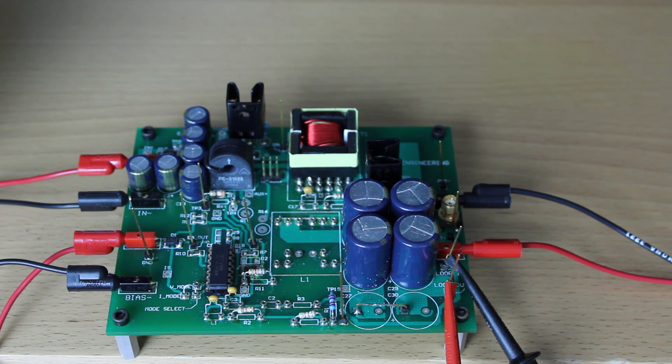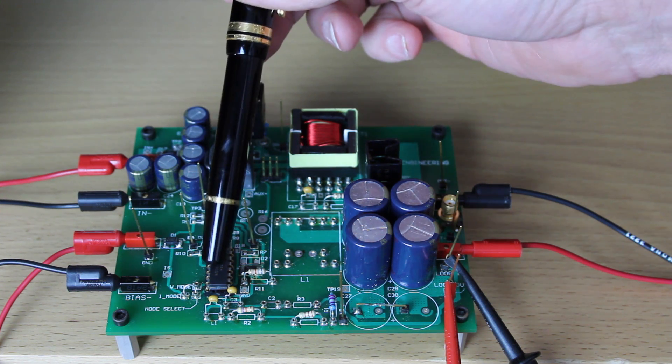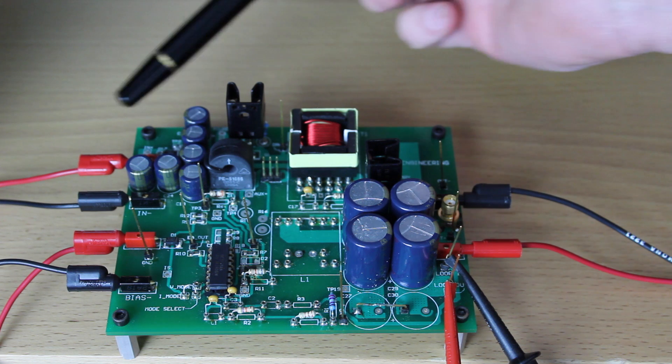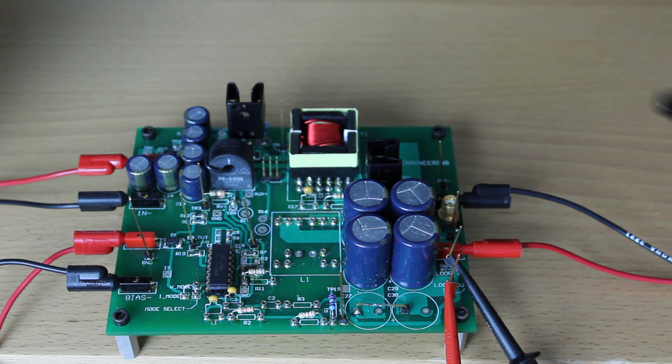So here we have a typical switching power supply. You can see on the input the capacitors, the power switch, control chip. Here's a flyback transformer wound by one of our four-day workshop attendees, output capacitors. We're now going to apply 60 volts to the input, and we're going to take a look at what's coming on the output of the power supply.